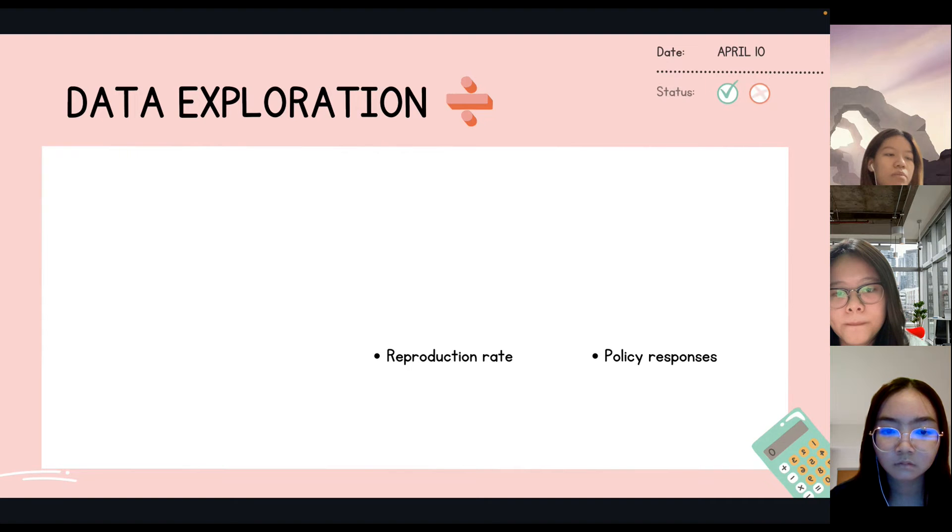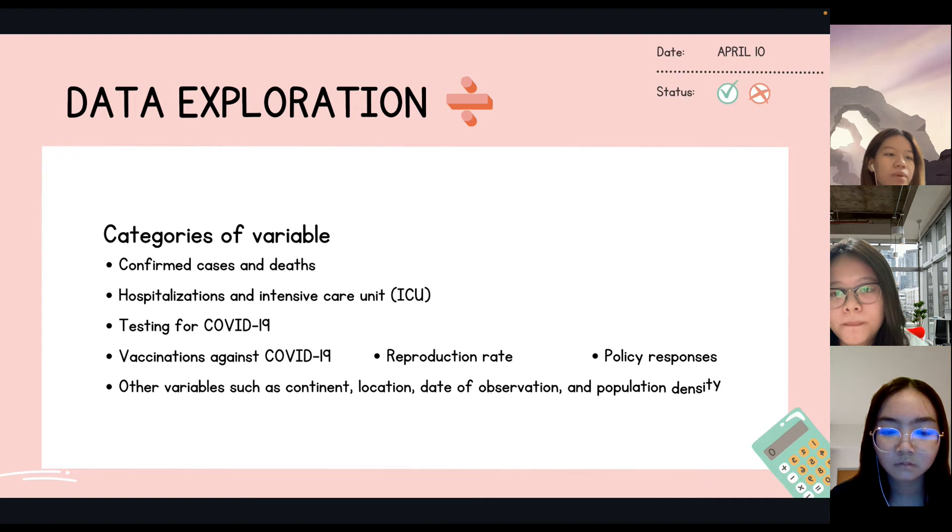The data columns represent a set of information: confirmed cases and confirmed deaths, hospitalization and intensive care unit ICU admissions, testing for COVID-19, vaccination against COVID-19, reproduction rate, policy response, and other variables such as continent, location, date of observation, and population density.